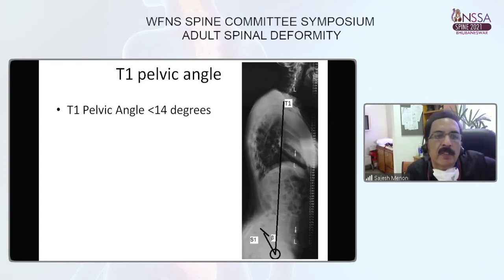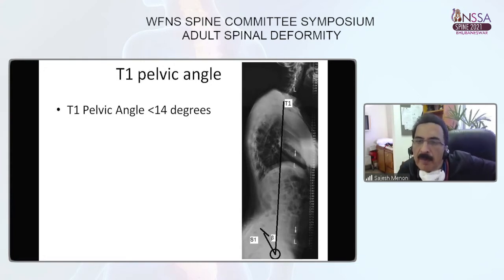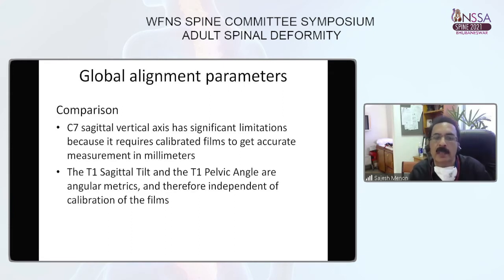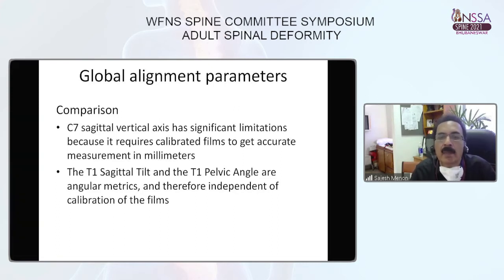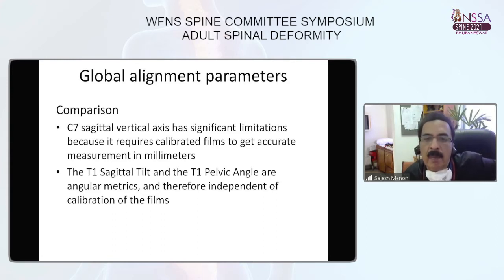The third parameter is the T1 pelvic angle, subtended by a line drawn from the superior endpoint of the sacrum to T1, and another line from the femoral head to T1; it should be less than 40 degrees. Comparing all three parameters, the C7 sagittal vertical axis has a significant limitation as it requires calibrated films for accurate measurements in millimeters. However, T1 sagittal tilt and T1 pelvic angle are angular measures and therefore independent of film calibration — magnification does not affect angular measurements, unlike linear ones.